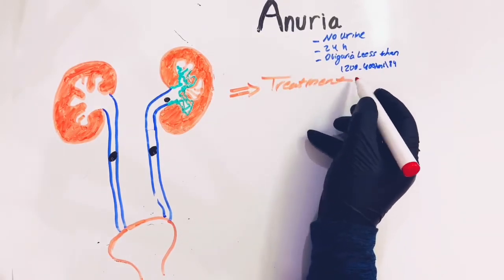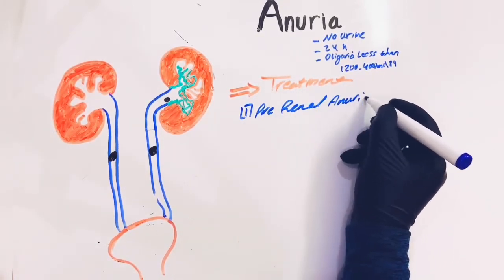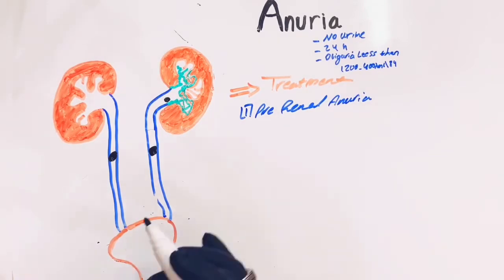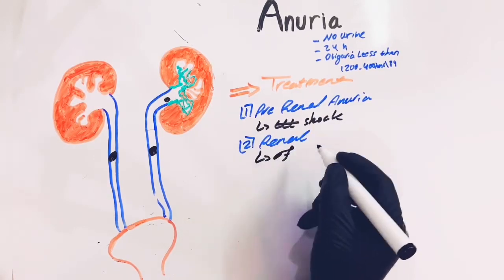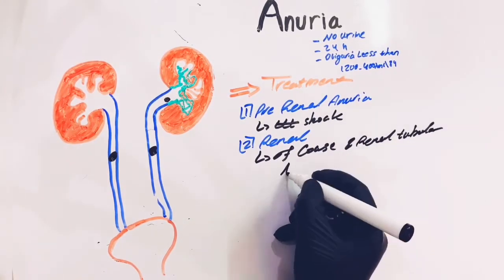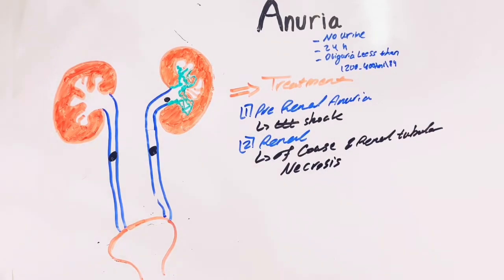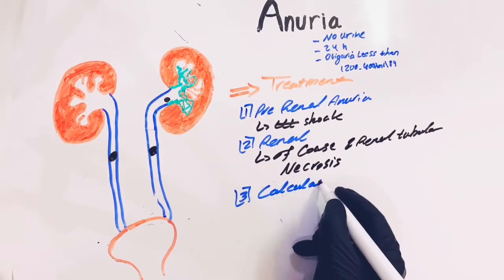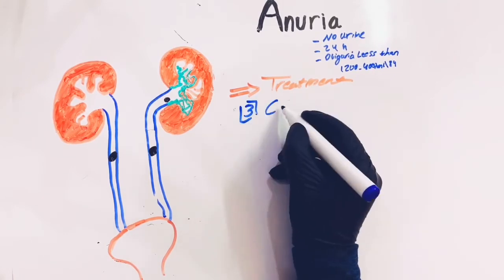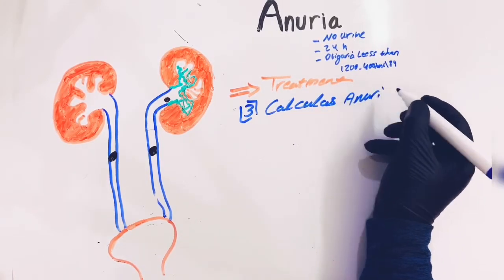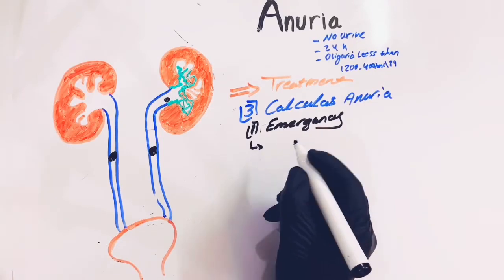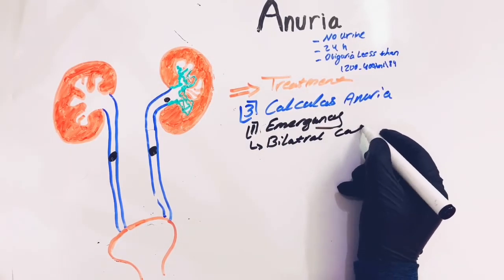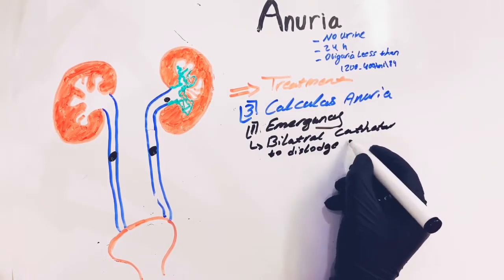For treatment, the treatment for prerenal and renal causes is the treatment of the underlying condition, whether it is shock or renal tubular necrosis. For treatment of calculus anuria, first we relieve the case by emergency treatment, then we proceed with stone extraction. For emergency treatment, we perform bilateral ureteric catheterization to dislodge the stone and remove the obstruction.